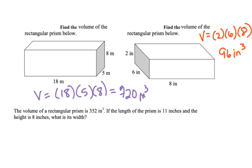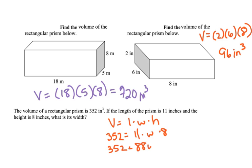The volume of a rectangular prism is 352 inches cubed. The length of the prism is 11, and the height is 8 inches. What is the width? So our volume equals length times width times height. We know our volume is 352 equals our length of 11. We need to find our width times our height of 8. I'm going to multiply 8 times 11, which will give me 88. So 352 equals 88W. We divide by 88 on both sides, and our width is 4.